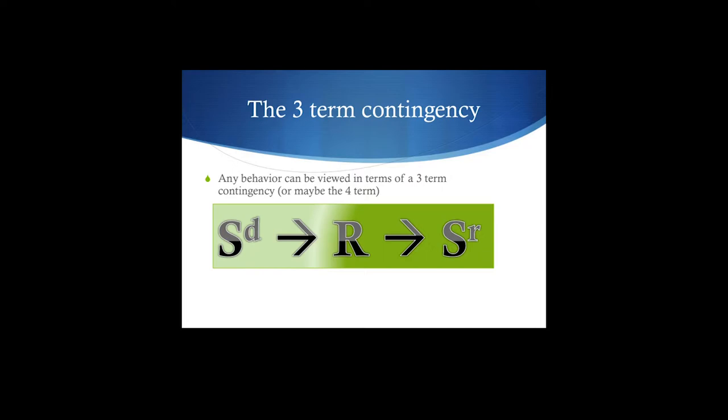Another way to think of a three-term contingency is the ABCs: the antecedents, the behaviors, and the consequences for behavior. Keep in mind, consequences do not imply good or bad. Consequences are just a thing that happens. It's a stimulus that you experience as a result of whatever behavior that you've done in a particular context. And what I just said there was actually re-describing the three-term contingency.